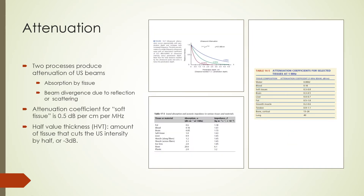A decrease in intensity of the ultrasound beam in the direction of propagation is called attenuation. There are two processes that produce attenuation: absorption by tissue and beam divergence due to reflection or scattering. The amount of attenuation can be described by the attenuation coefficient of tissue. For soft tissue, an approximate rule of thumb is an attenuation coefficient of 0.5 dB per centimeter per megahertz. Higher ultrasound frequencies are attenuated more than lower frequencies. The half-value thickness is the thickness of tissue needed to reduce the intensity of the ultrasound beam by a factor of 2, or negative 3 dB.